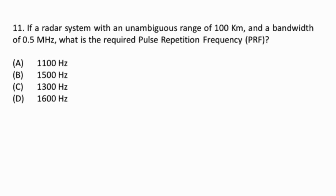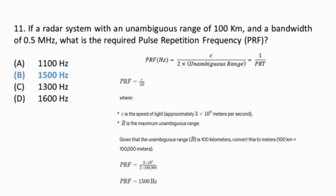Question 11: This is a numerical question based on radar basics. If a radar system has an unambiguous range of 100 km and a bandwidth of 0.5 MHz, what is the required pulse repetition frequency? The PRF is calculated by dividing the speed of light by twice the maximum unambiguous range. The required pulse repetition frequency for the radar system is 1500 Hz.